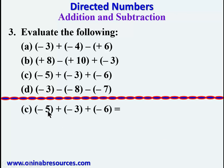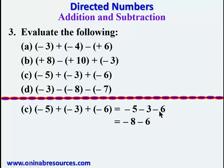For problem 3(c): the first number is negative 5, which we maintain as negative 5. Positive times negative gives negative, and positive times negative again gives negative. So we have negative 5 minus 3 minus 6. We evaluate negative 5 minus 3, which gives negative 8, then negative 8 minus 6 gives negative 14, since both are negative we keep the negative sign and add.